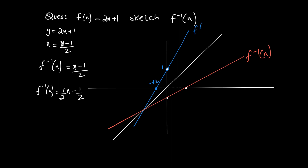The inverse function has gradient ½. The point (0, 1) becomes (1, 0) and the point (−½, 0) becomes (0, −½). Draw the graph so it looks like the reflection of the original function — this is your inverse function, with the line y = x as the mirror.